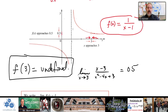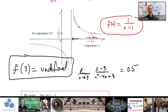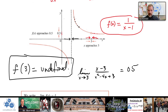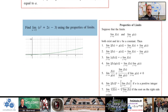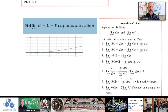One place we run into trouble is a jump discontinuity, which we'll cover in the next section, or a vertical asymptote. At x=1, the graph doesn't approach any value — from the left it races toward positive infinity, and from the right toward negative infinity. It's not settling in on one point; it's going in opposite directions. So there is no limit there.